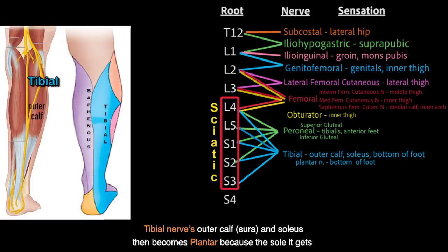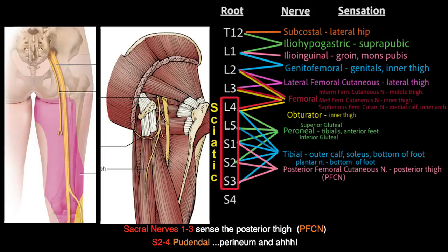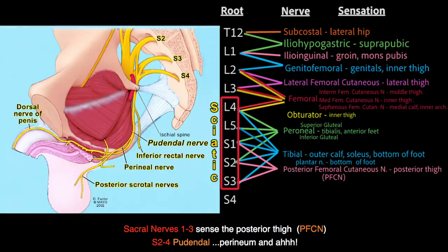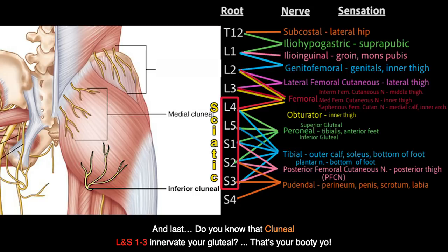Tibial nerves: outer calves — sural and soleus — then becomes plantar because the sole gets it. Sacral nerves 1 to 3 sense the posterior thigh. S2 to 4's pudendal: perineum.